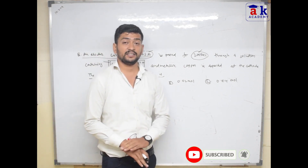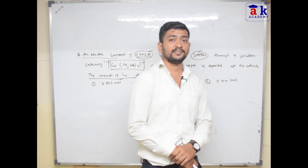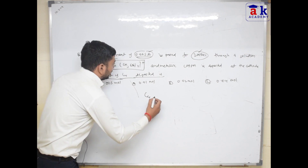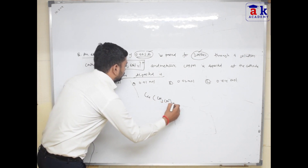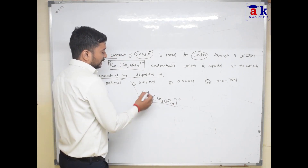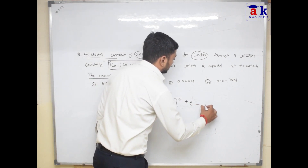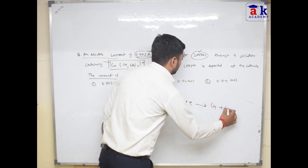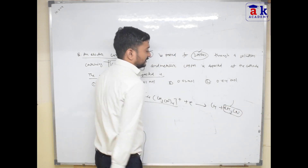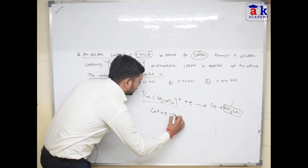सबसे पहले इसमें जानने की बात यह है कि reaction क्या होता है। Copper का अगर हम उसमें electricity pass करेंगे — हमारे पास दिया हुआ है Cu(CH₃CN)₄⁺ — तो copper का oxidation state केवल +1 है। तो यह एक electron accept करेगा और बनाएगा copper, जबकि CH₃CN के 4 mole बाहर निकल जाएंगे।